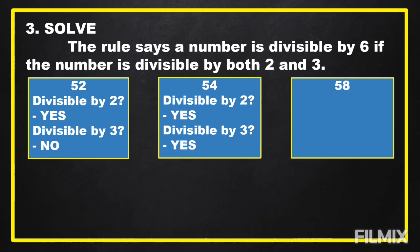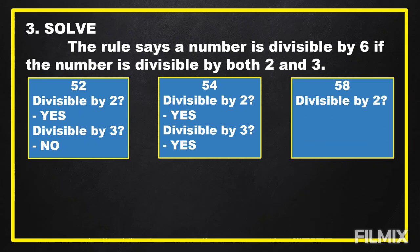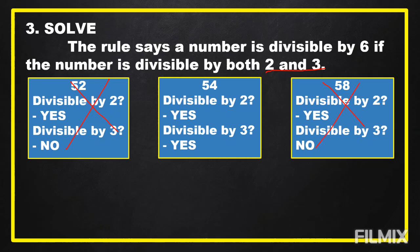The last option is 58. Is 58 divisible by 2? Yes, because it ends with 8. Is 58 divisible by 3? Let's add the digits: 5 plus 8 equals 13, and 13 is not divisible by 3. So 58 is not divisible by 3. We're going to eliminate the options not divisible by both 2 and 3, which are 52 and 58. The remaining option is 54.